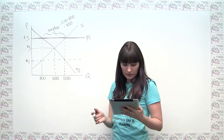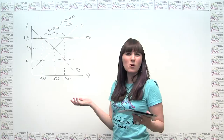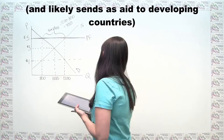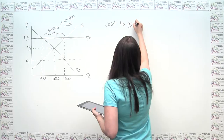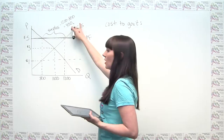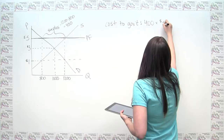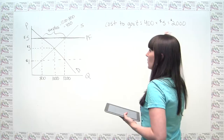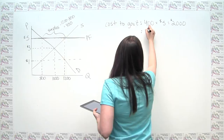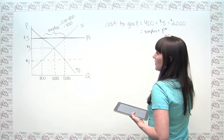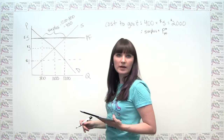The last part of this question asks how much does the program cost the government — how much does the government pay out to get this corn it probably doesn't really want? Thinking logically, they're buying 400 bushels of corn and paying $5 for each of those bushels. So the total cost to the government is 400 times 5, which is $2,000. We can generalize: the cost to the government is the amount of the surplus times the price maintained by the price floor.